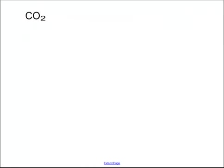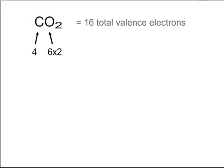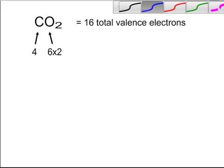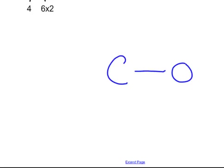Let's go to a harder example. This is carbon dioxide — CO2 — what we breathe out. Carbon has four valence electrons, and oxygen has six, but we have two of them. So six times two is 12, and 12 plus four gives us 16 electrons to work with. Carbon is the lone atom, so it goes in the center, and we fill the outside oxygens with octets.